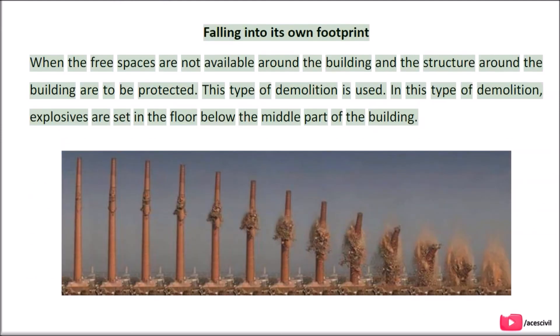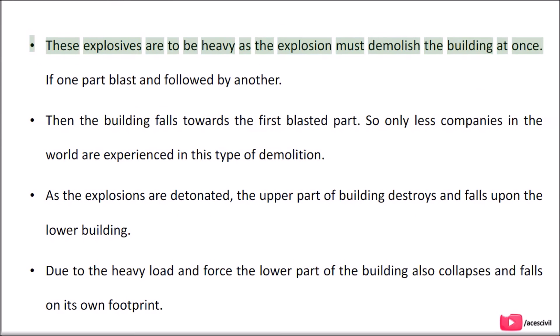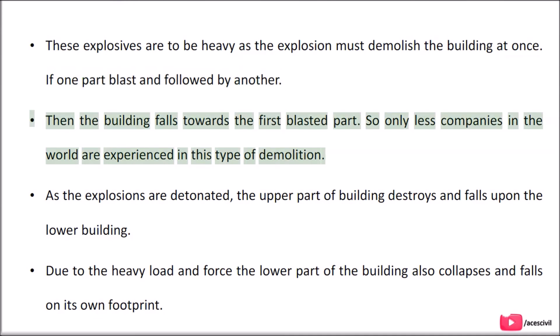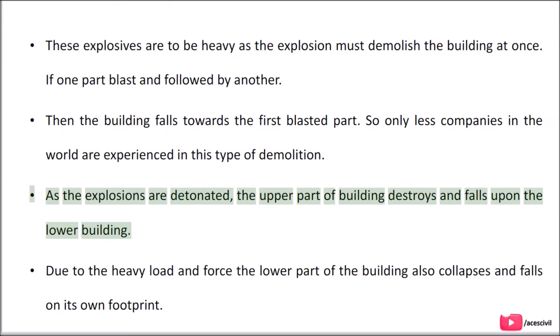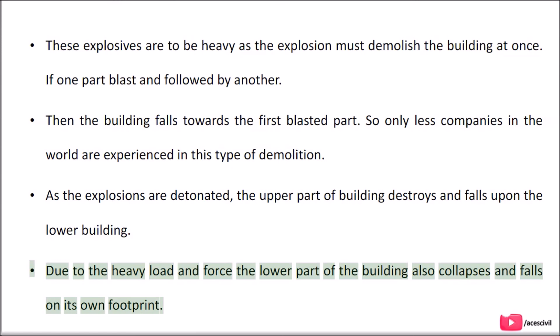Falling into its own footprint: When free spaces are not available around the building and surrounding structures need to be protected, this type of demolition is used. Explosives are set in the floors below the middle part of the building, and must be heavy enough so the explosion demolishes the building at once. If one part blasts first and is followed by another, the building falls toward the first blasted part. Only a few companies in the world are experienced in this type of demolition. As the explosives are detonated, the upper part of the building collapses and falls upon the lower part, which then also collapses under the heavy load and force, falling within its own footprint.